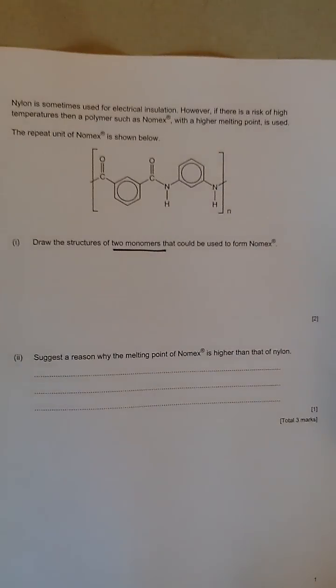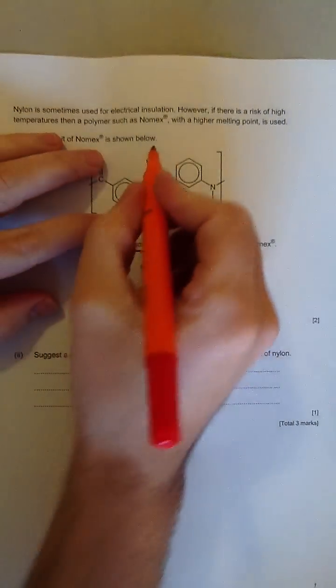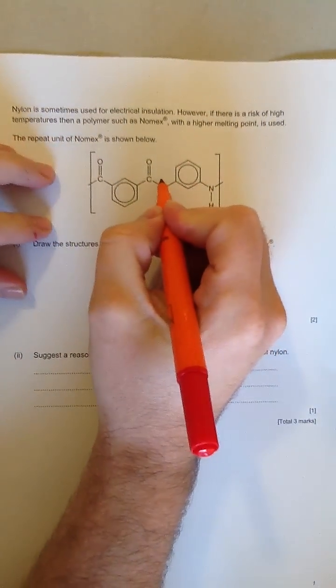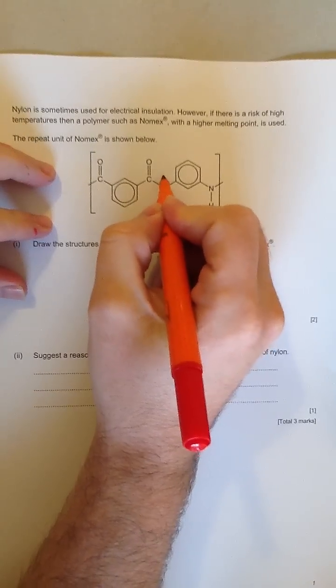When you look at this type of molecule, the important thing to recognize is which bonds are formed when you combine the two monomers. And in all these cases, the bond that's formed is the carbon-nitrogen bond.